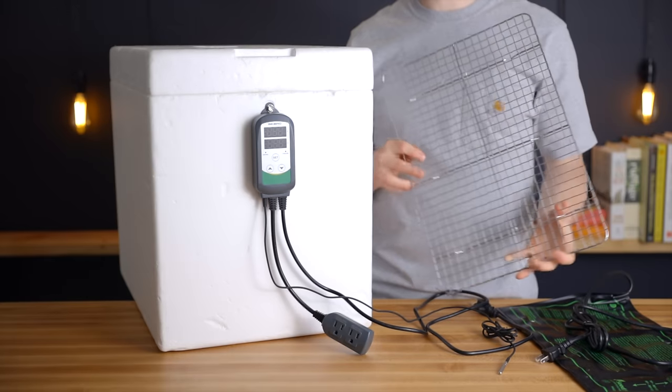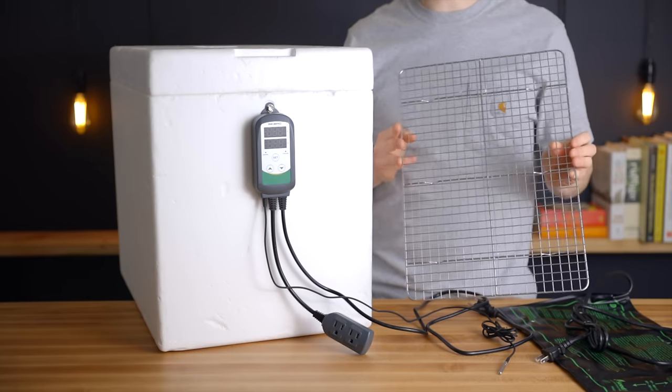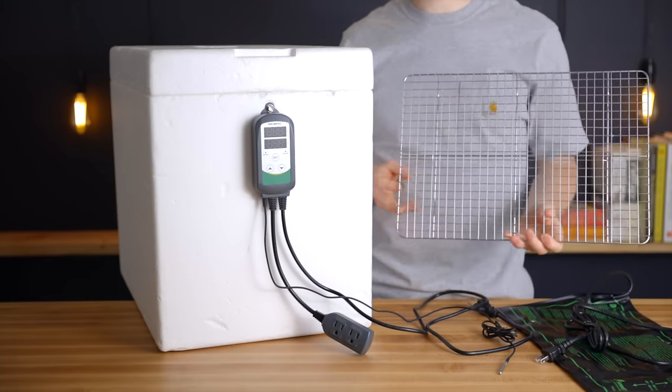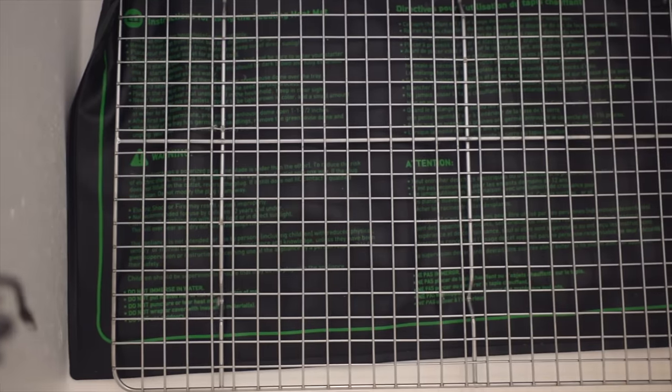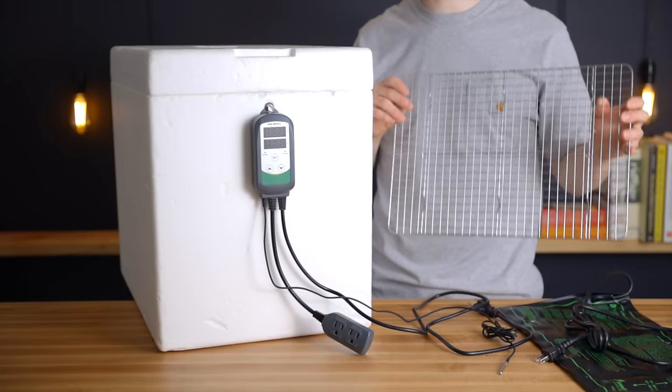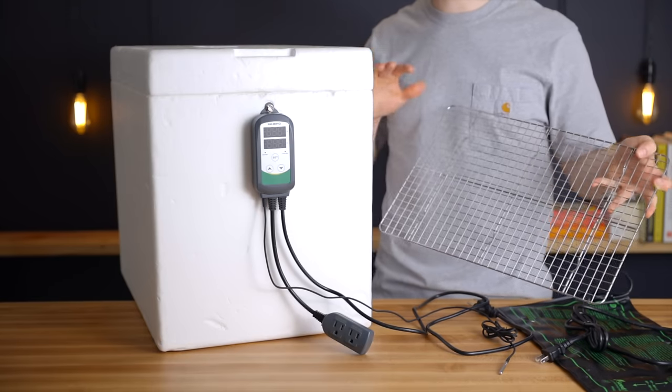Now the last item which is technically optional but I'd highly recommend it is a half sheet cooling rack. So you can basically just set this on top of the seedling mat so that anything you place inside the box doesn't directly touch the mat. And like I said this box is the perfect size to exactly fit one of these. So let me show you how I set it up.